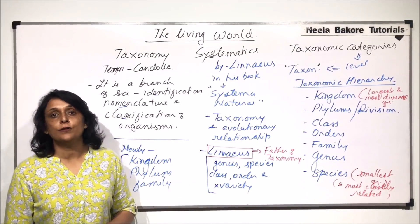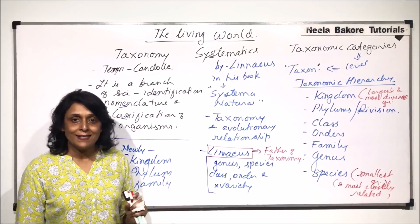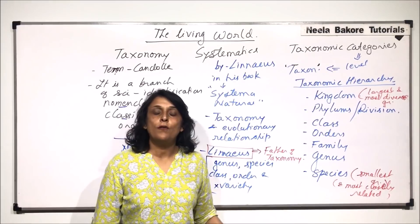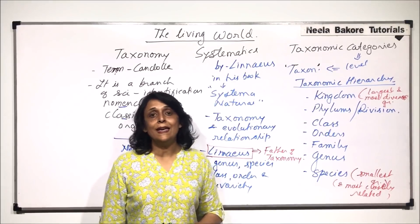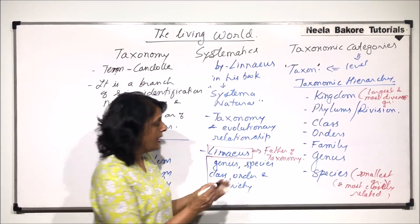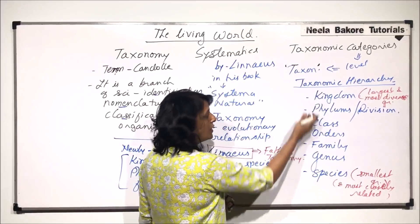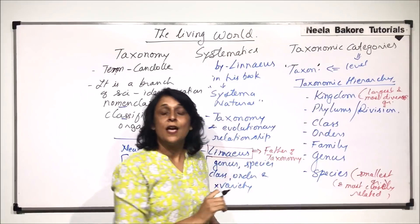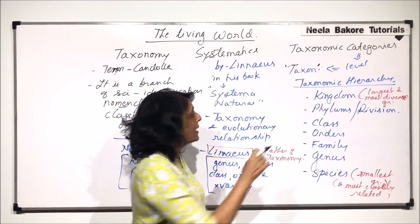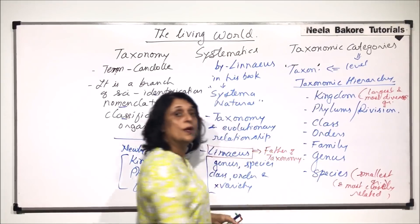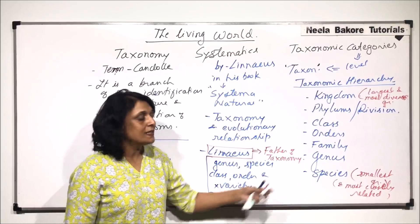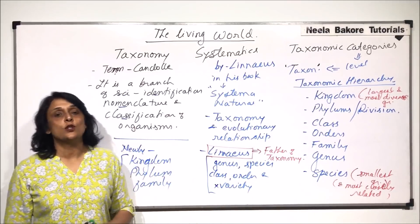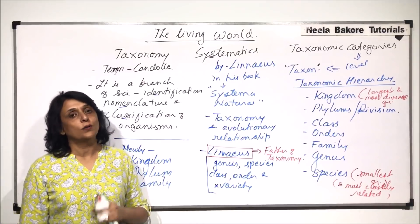The most important thing is the arrangement of these taxons in ascending or descending order. If we are going from species upward, we are going in ascending order — from the smallest to the largest. If we are going in descending order, we go from the largest to the smallest. These are the seven taxons or categories in which we classify all organisms.